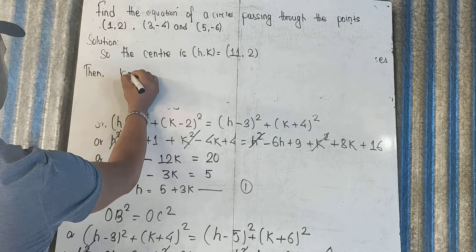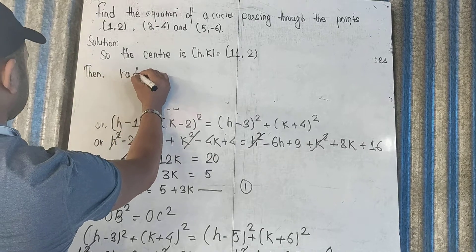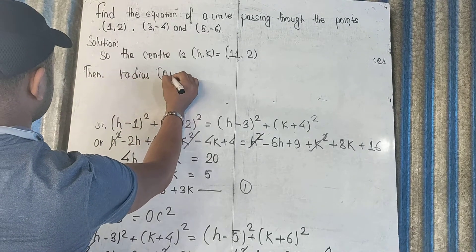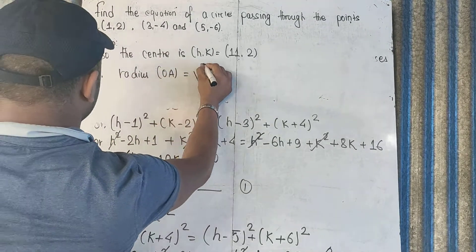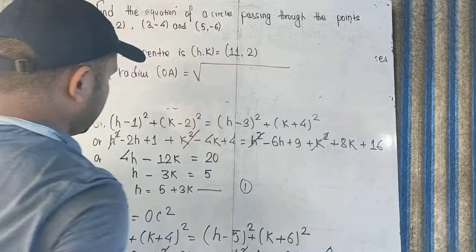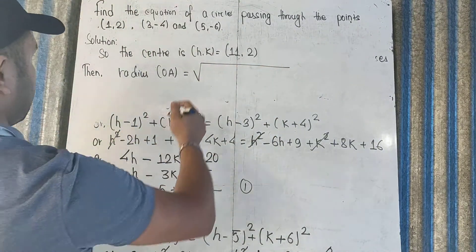The radius is given by the distance from the center O to one of the given points, say point A (1, 2). So radius squared equals (11 minus 1) squared plus (2 minus 2) squared, which gives 10 squared, so the radius is 10 units.